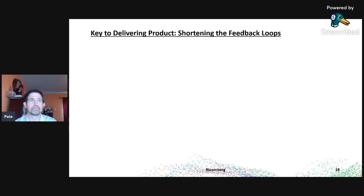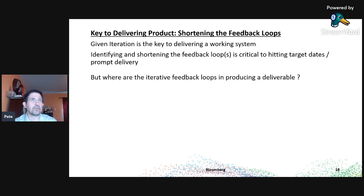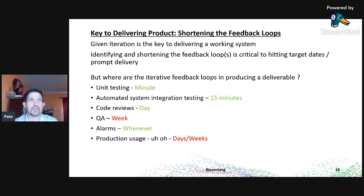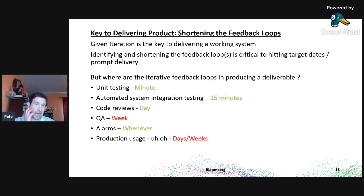Given that iteration is the key, how do we identify the loops critical to hitting target dates? The iterative feedback loops are: unit testing gives feedback in minutes; automated system integration testing takes maybe 15 to 30 minutes; code reviews catch things but take a day or two; QA is weekly or bi-weekly; alarms happen whenever they happen; and production usage can be days, weeks, or months down the road — and when it hits, it's usually unpleasant with a huge sense of urgency.